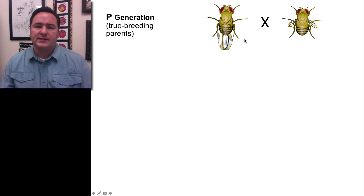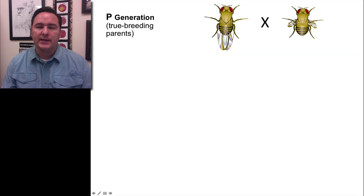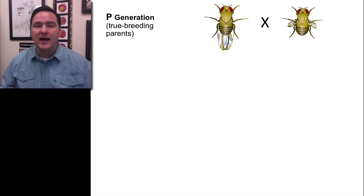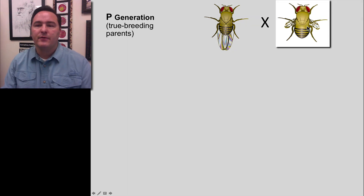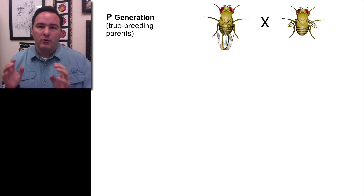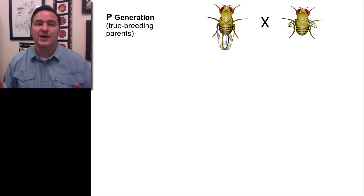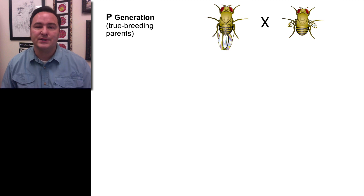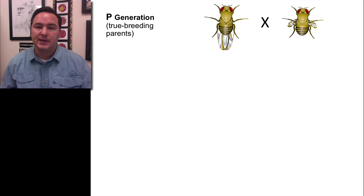Here we have a true breeding fly that has wings. We know it's true breeding because for many generations the only flies that have come out of this familial line are fruit flies with wings. Over here we have a fruit fly with vestigial wings — kind of all folded up and crinkled — and we know this is a true breeding vestigial-winged fly because for many generations the only flies that emerge from the pupa have these vestigial wings. Now we take one from each of those populations, bring them together, allow them to mate, and watch what happens in the offspring.